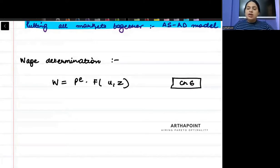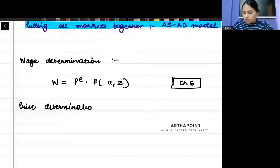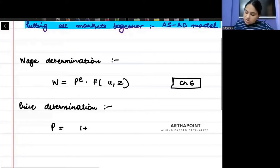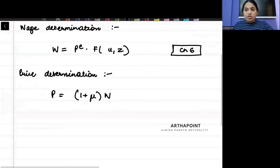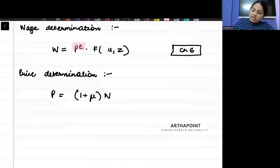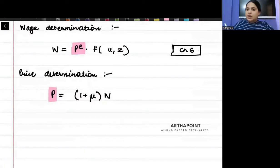Then the other thing that we talked about was the price determination relationship. The price determination relationship was to understand that price is a markup over and above the wage. Price is set by the firms and it is a markup over and above the wage. Now, if you remember, we had found the equilibrium in chapter six by assuming that the expected price is equal to the actual price.